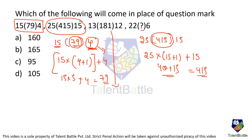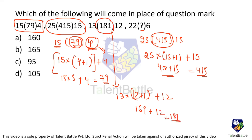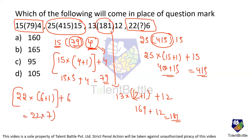13 into 13 plus 12 gives 181 — satisfied. Now applying to our unknown: 22 into (6+1) plus 6, which is 22 into 7 plus 6. 22 into 7 is 154, and 154 plus 6 is 160. So the answer for this question is option A.